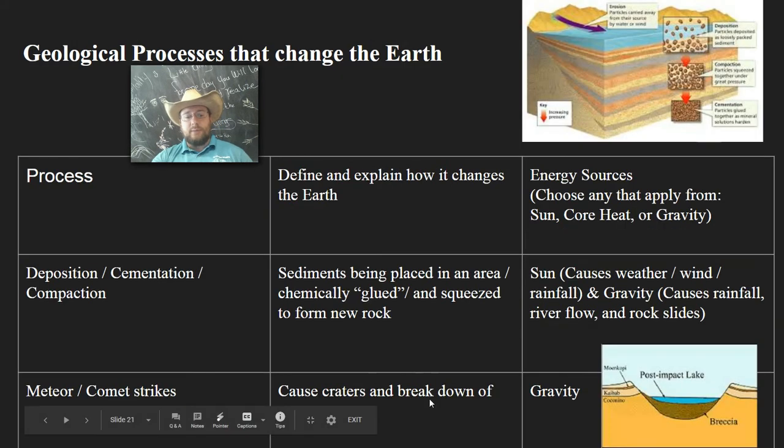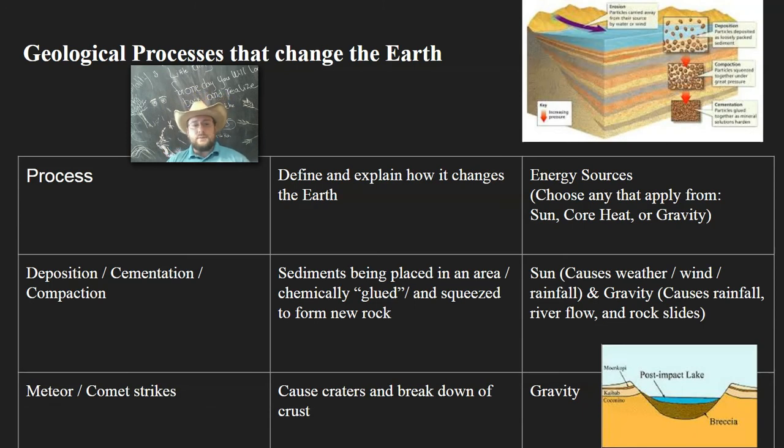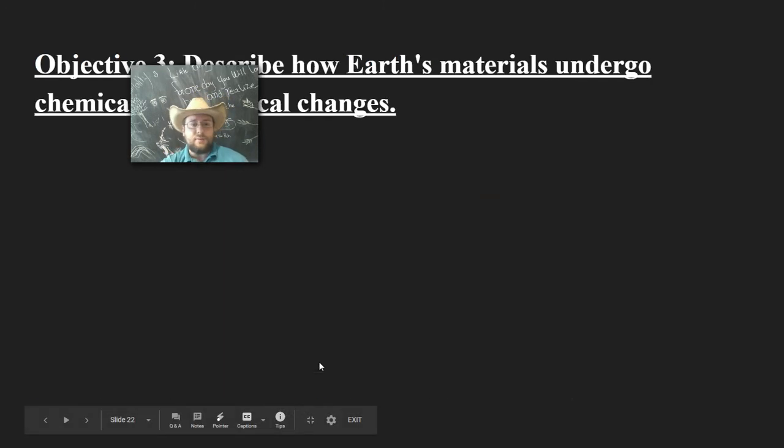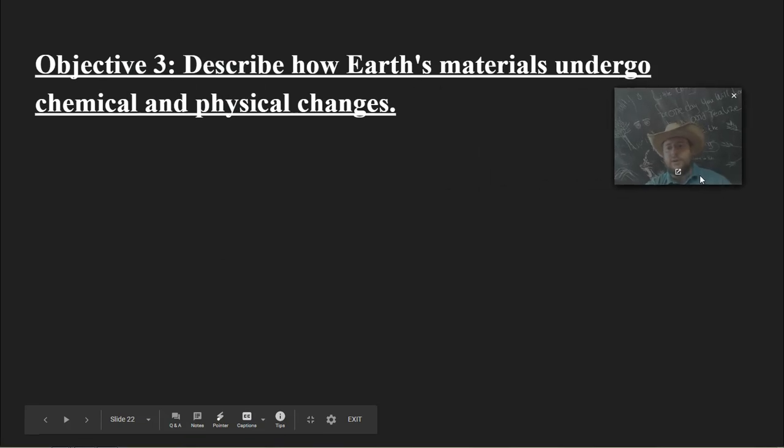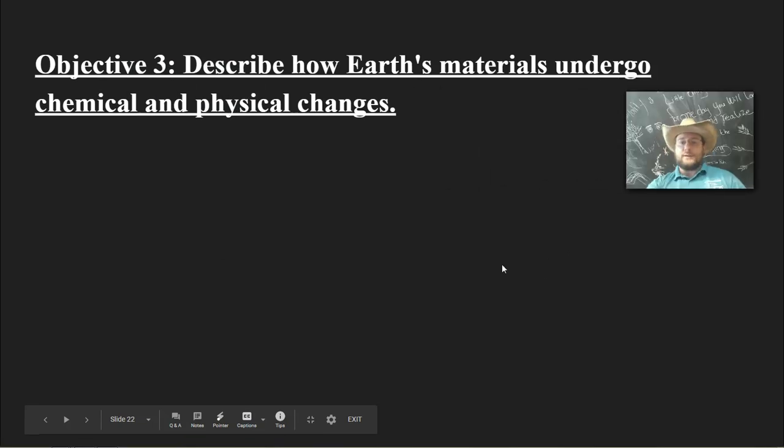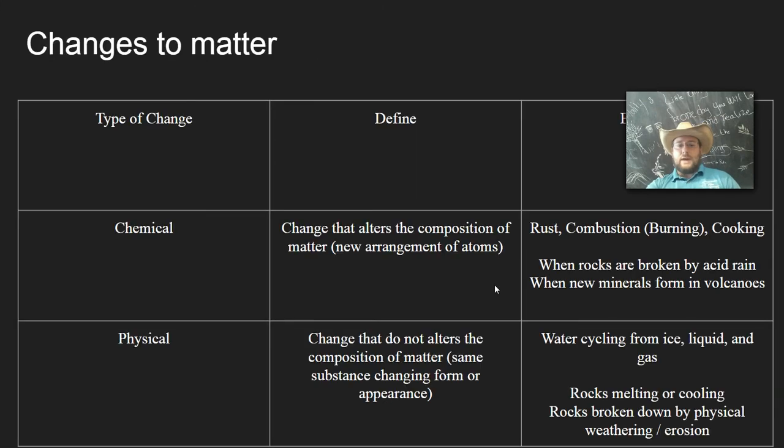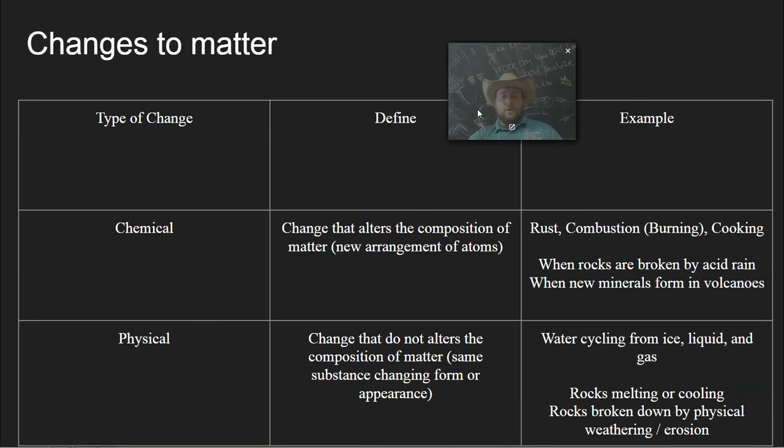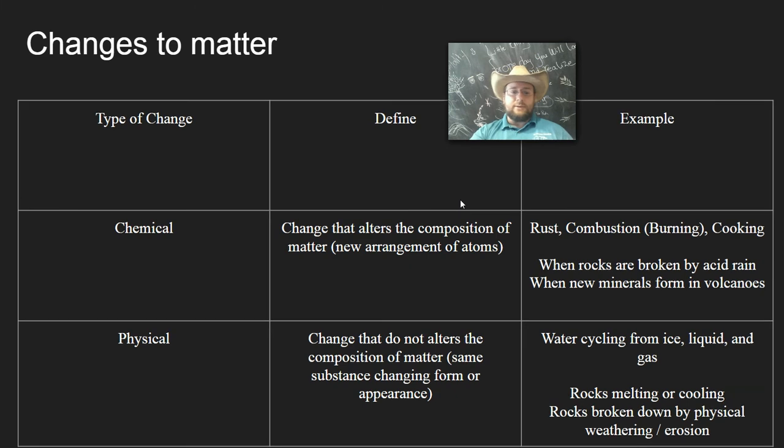Finally, you have meteors, which are caused by the force of gravity and orbits and just getting unlucky and getting hit by one of those rocks. So these are the processes that change the surface of the Earth and the energy behind them. Then we talked about that these processes cause physical and chemical changes to the Earth's surface, which can be best described through the rock cycle. But before I did that, I described what is a physical and chemical change.